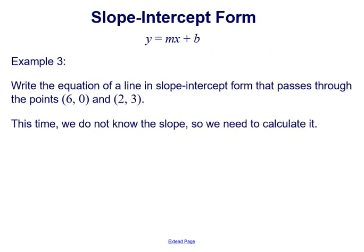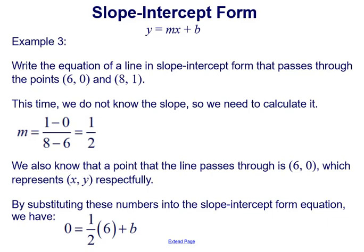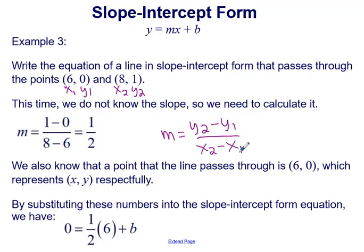In example three, we're asked to write the equation of a line in slope-intercept form that passes through the points (6, 0) and (8, 1). Since we don't know the slope, we need to calculate it first using the slope formula. We can think of (6, 0) as x1 and y1, and (8, 1) as x2 and y2. Using the formula — y2 minus y1 over x2 minus x1 — we get 1 minus 0 over 8 minus 6, which gives a slope of 1 half.